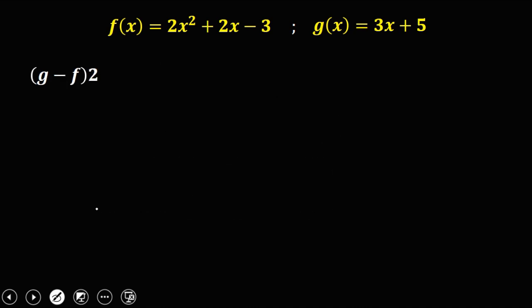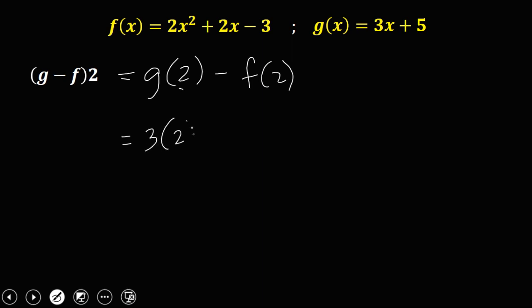So another problem. This equation is equal to g of 2 minus f of 2. Then substitute for g of 2 — we use the g of x function, but x is equal to 2. So 3 times 2 plus 5. Take note that for subtraction, you need to put the second function inside parentheses.